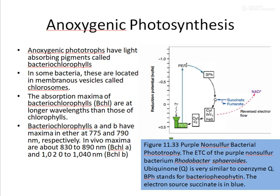Every pigment can absorb light at a specific wavelength. In the case of bacteriochlorophyll A, in vivo — meaning inside the bacteria — it will absorb wavelengths between 830 to 890 nanometers. In this picture, the photosystem depicted in purple non-sulfur bacteria is given as P870, meaning it can absorb light at 870 nanometers. Unlike normal chlorophylls, the bacteriochlorophylls absorb light of higher energy.